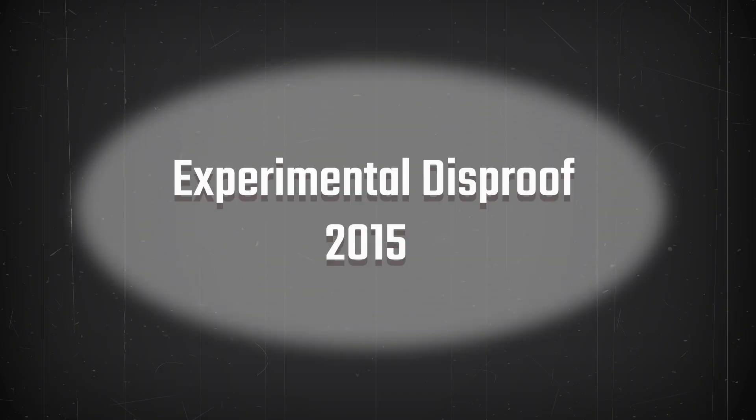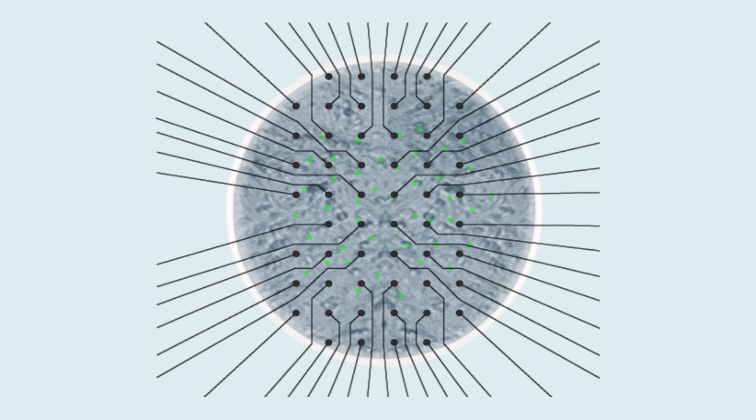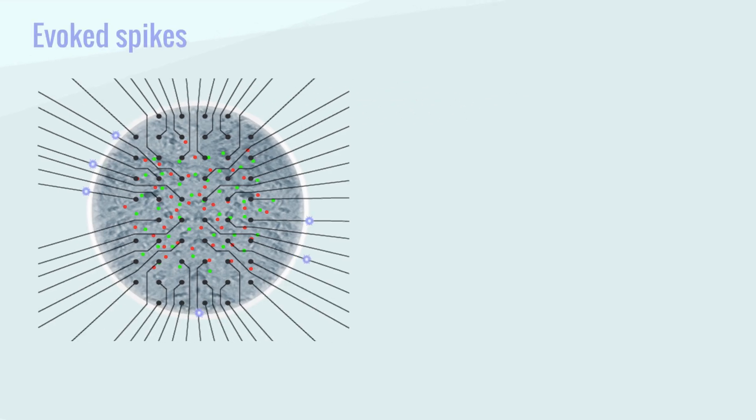Experimental disproof: a neuronal culture planted on a 60-multi-electrode array, with excitatory and inhibitory synapses and spontaneous evoked spikes.